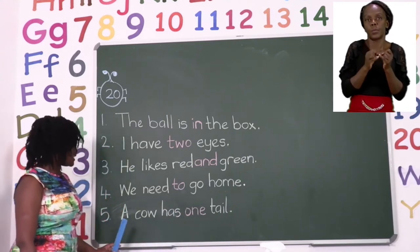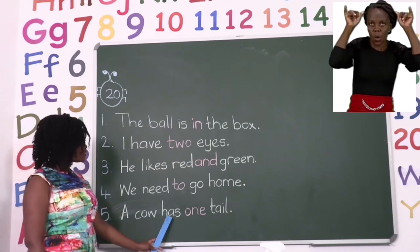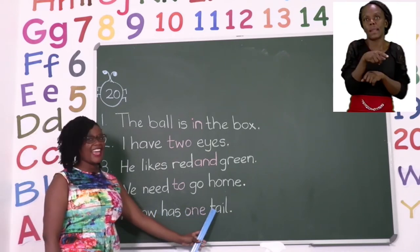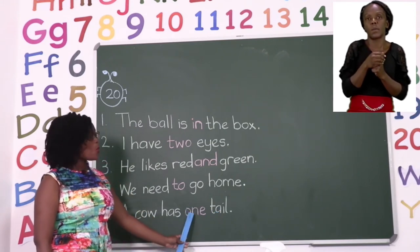Then the last one says, a cow has one tail. And our sight word there is the word one.